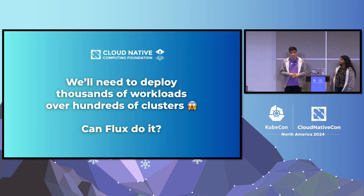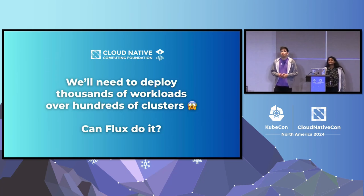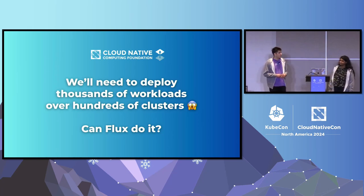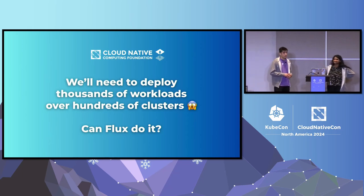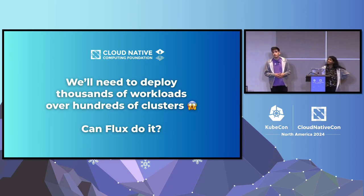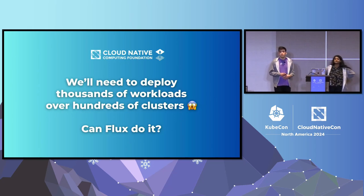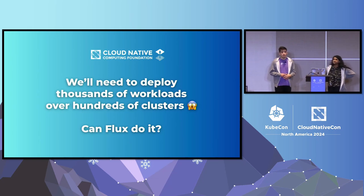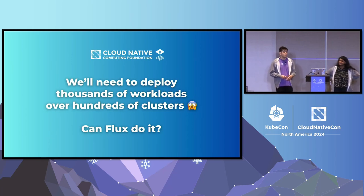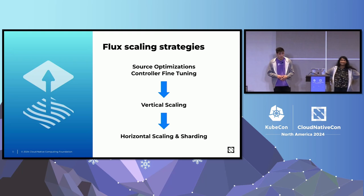Say you want to deploy 1,000 workloads on 100 clusters — that's quite the fanout. There's going to be a lot of reconciliation, and because we're doing GitOps with pull-based continuous delivery, that doesn't just happen once — it could be happening every hour or every five minutes. That's a lot of traffic to Kubernetes API servers. Can a single installation of Flux handle this? Yes. Let's talk about how to get there.